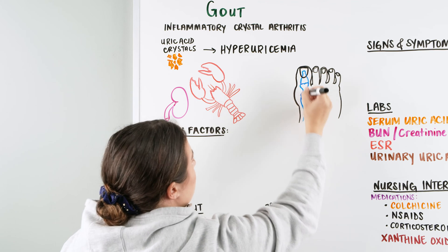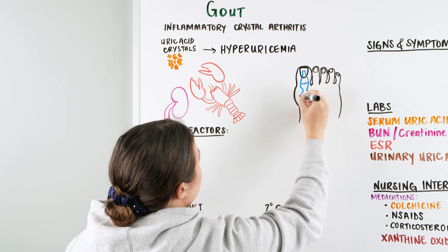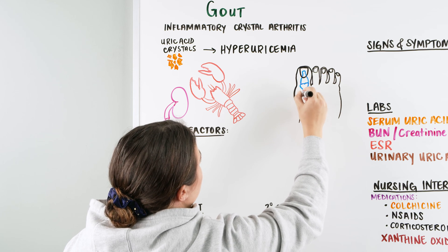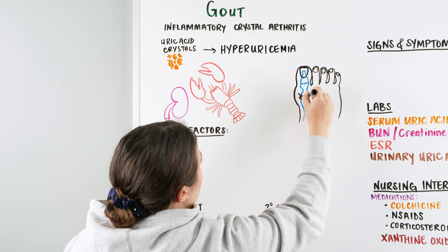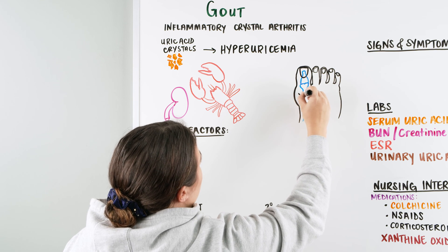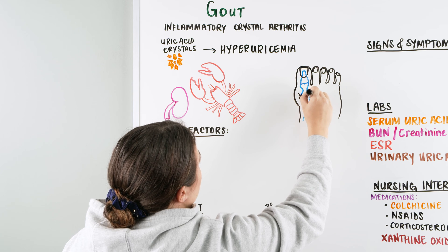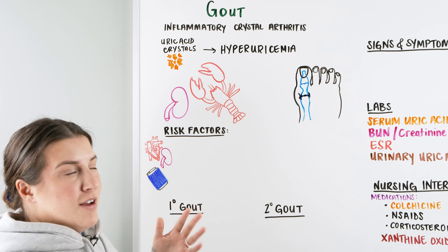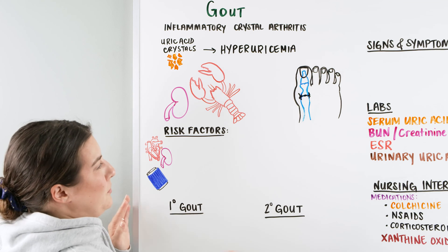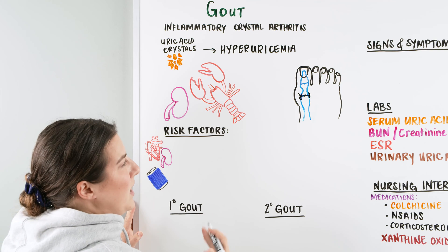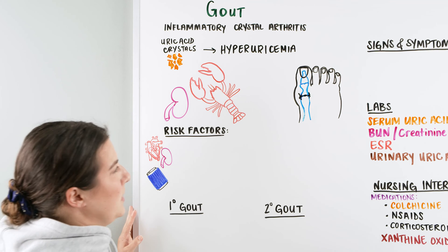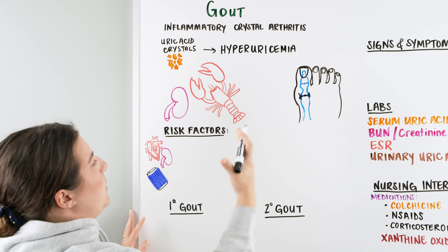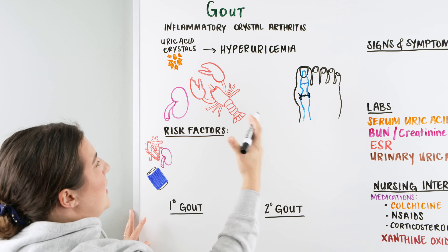Those crystals can actually get deposited into our joints — things like our great toe or big toe, our thumb, our knee, our ankle. They'll get into these joints and create basically arthritis-like conditions. So they're going to be inflammatory — it's going to be red, it's going to feel swollen, and it's going to hurt with movement. And we call this gout.